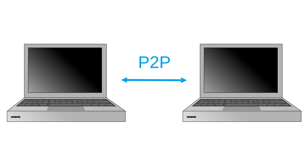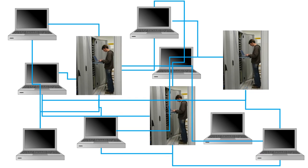Not quite all Internet content is on servers, though. Peer-to-peer sharing software allows users to download files directly from each other's Internet-connected personal computers rather than from a large central server. In either case, Internet activity is the activity of machines sending information and information requests to each other.